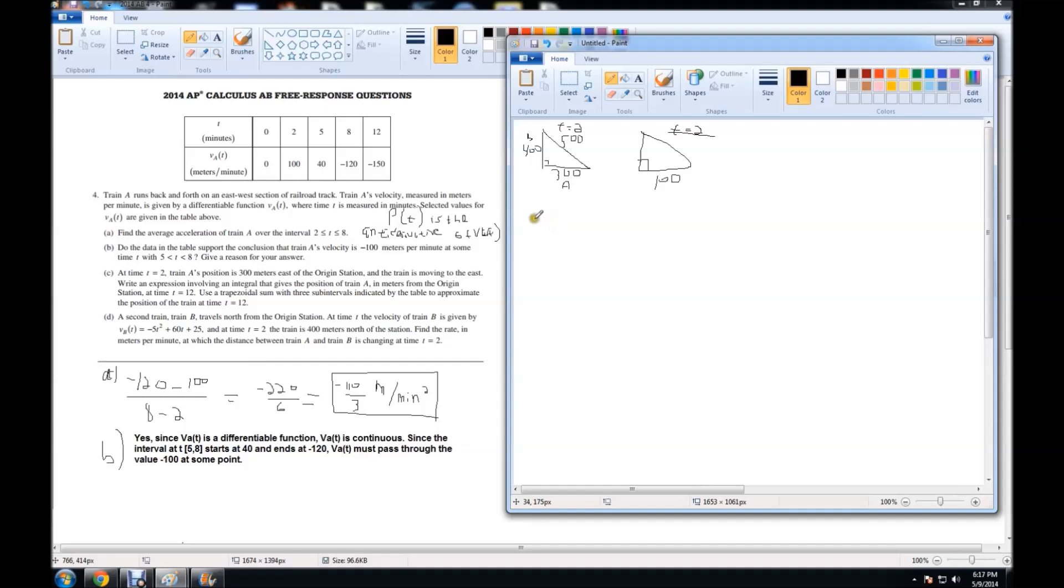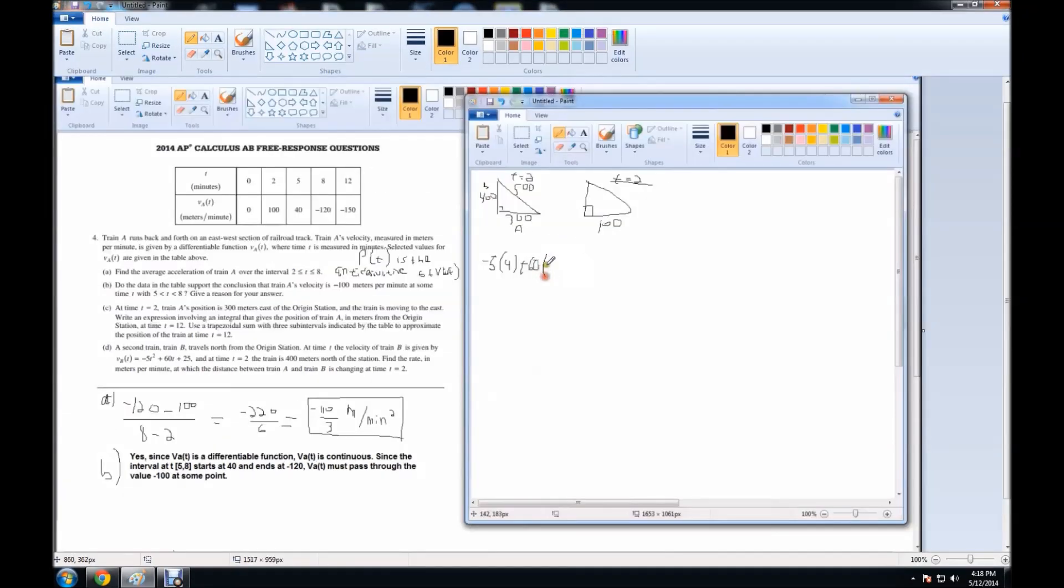When we plug in 2, we get negative 5 times 2 squared, which is 4, plus 60 times 2, plus 25, is equal to 125. So we know that on the rate triangle, this value is 125, and I'm going to call the missing side C to match with our triangle.